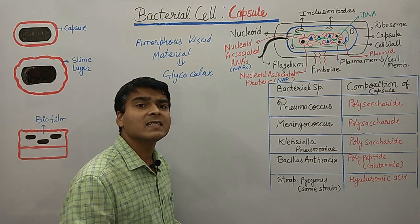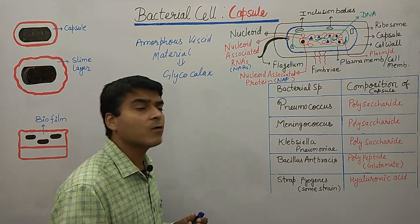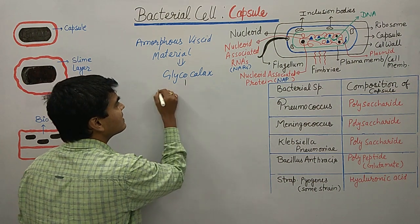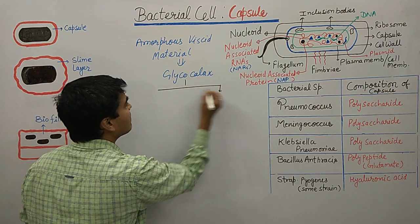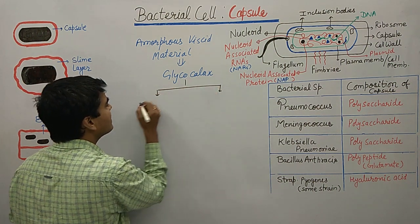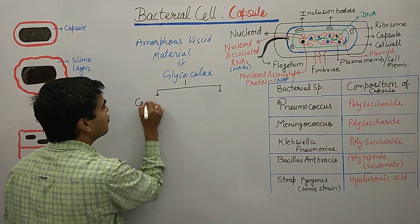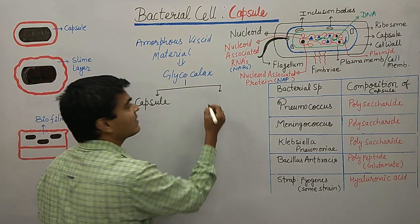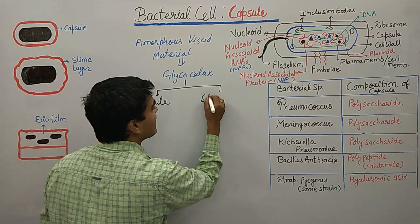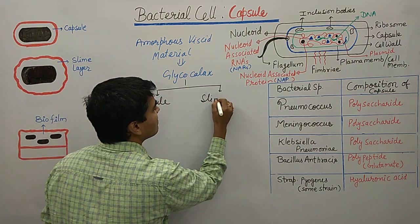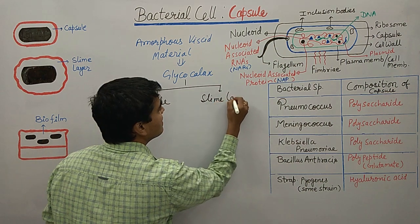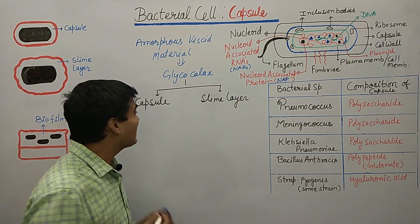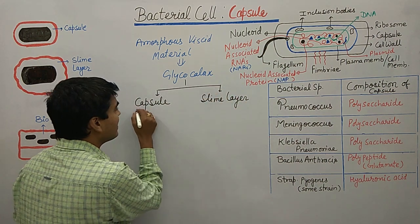The glycocalyx is of two types. The first one is the capsule, and the second one is the slime layer.